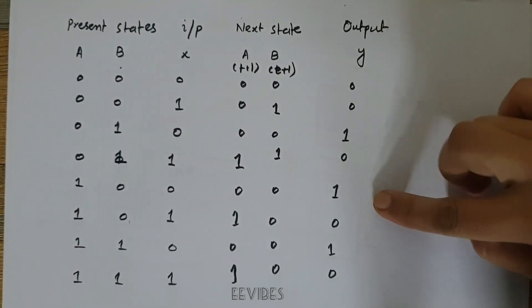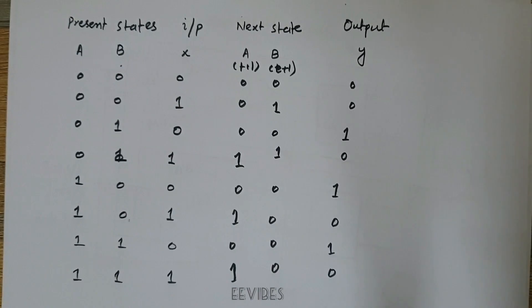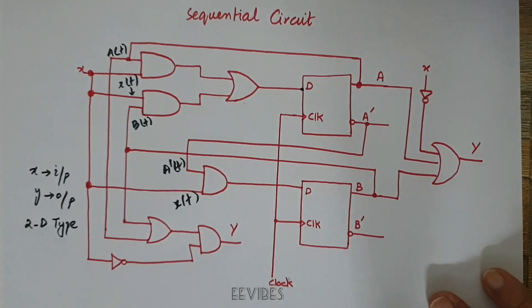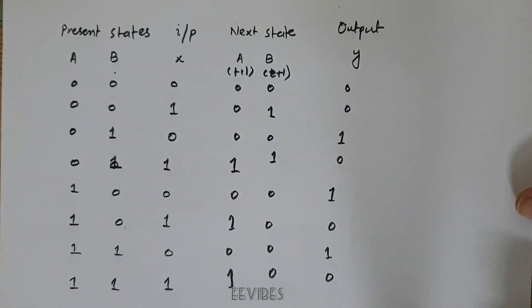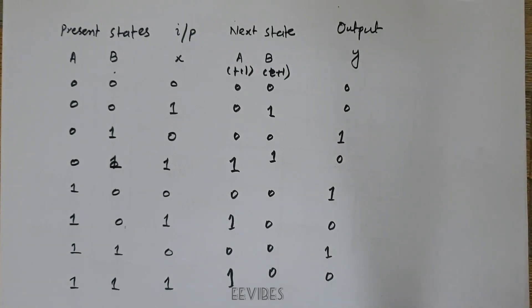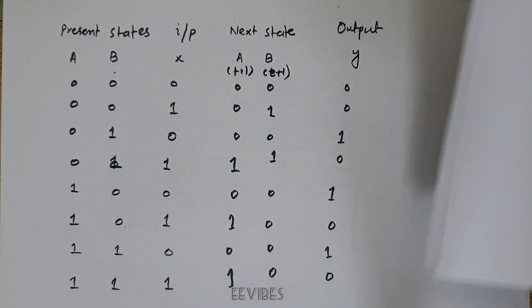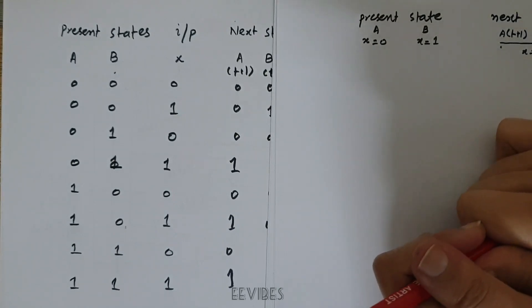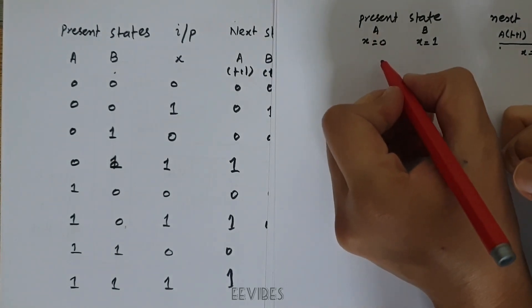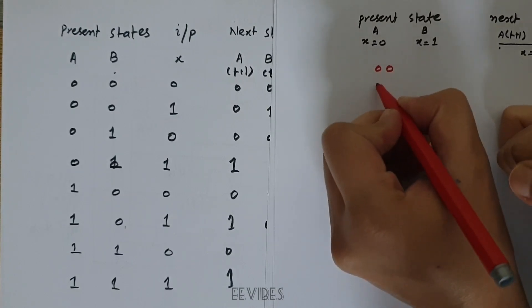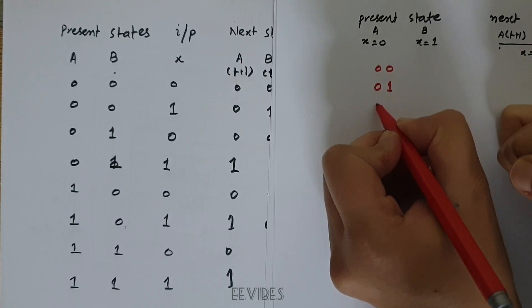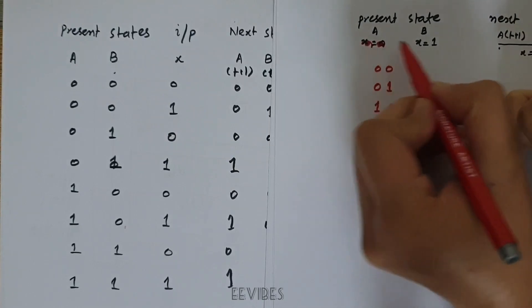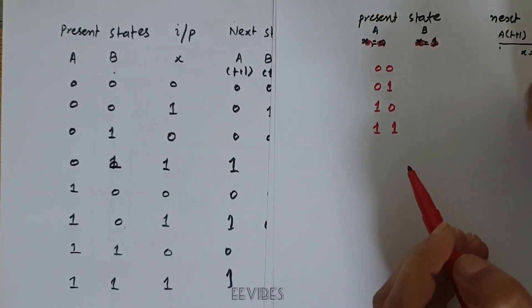In the first part we constructed this state table from the given sequential circuit shown here. Now we will see how we can compress this state table for determining the state diagram from it. Since we have two flip-flops, the possible states are: both can be 0, they can be 0 1, 1 0, or finally 1 1. We don't need to mention whether input x is equal to 1 or x is equal to 0.